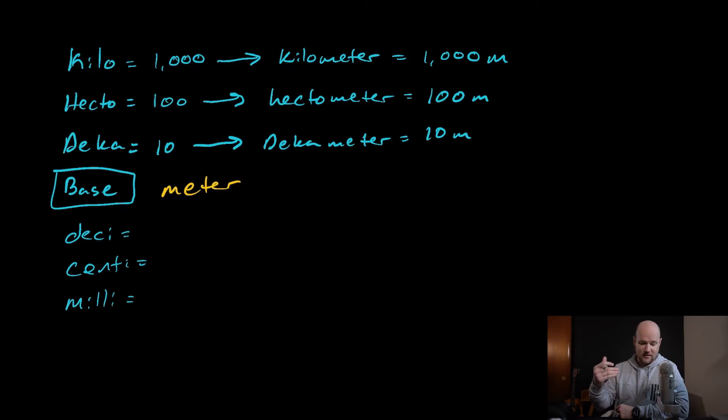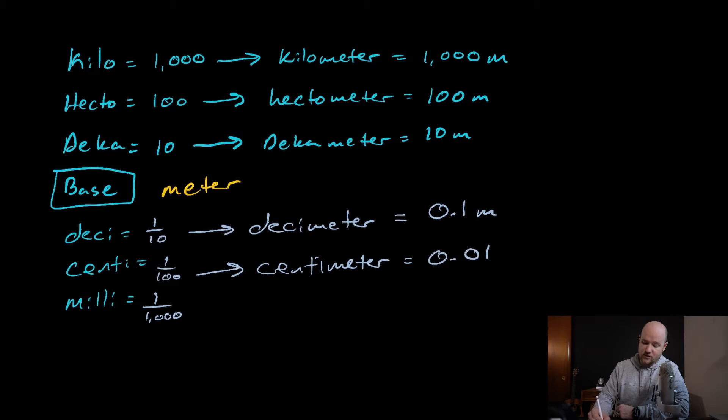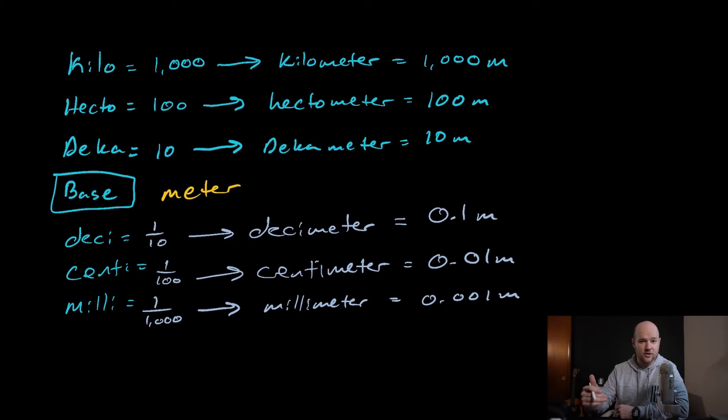Now deci, centi, and milli are a little bit different than kilo, hecto, and deca. You can see that kilo is at a thousand, that's a thousand, then hecto you lose a zero, it goes down to a hundred, and then deca goes down to ten. Well, deci means one-tenth, and centi means one one-hundredth, and milli, you guessed it, one one-thousandth. So if you had a decimeter, that means you had 0.1 meters. If you had a centimeter, that means you had 0.01 meters, or one one-hundredth of a meter. And if you had a millimeter, that means you had 0.001 meters.